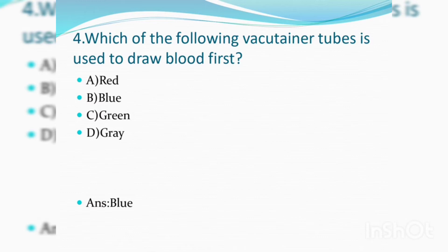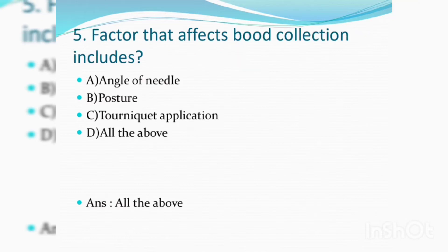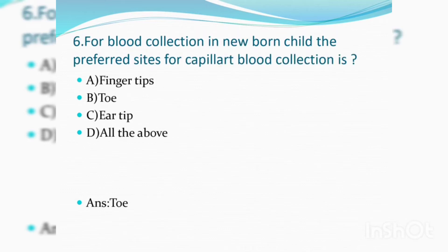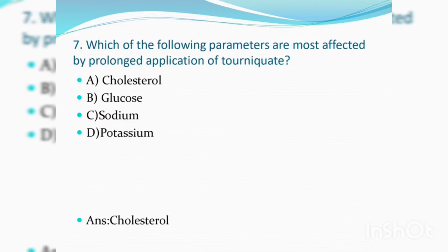Factors that affect blood collection include: option A – angle of needle, option B – tourniquet, option C – tourniquet application, option D – all of the above. Answer: All of the above. For blood collection in a newborn baby or child, the preferred site for capillary blood collection is the heel. Which of the following parameters is most affected by prolonged application of tourniquet? Answer: Cholesterol.